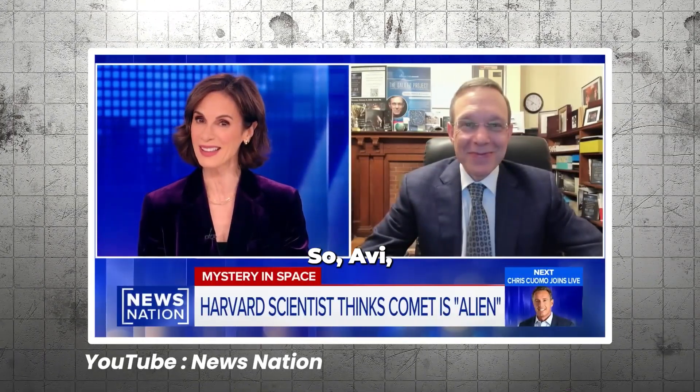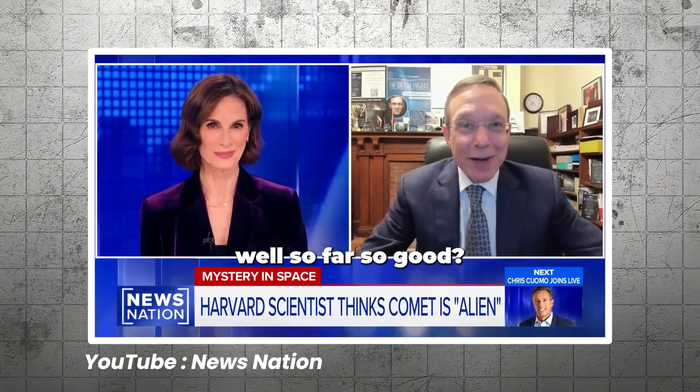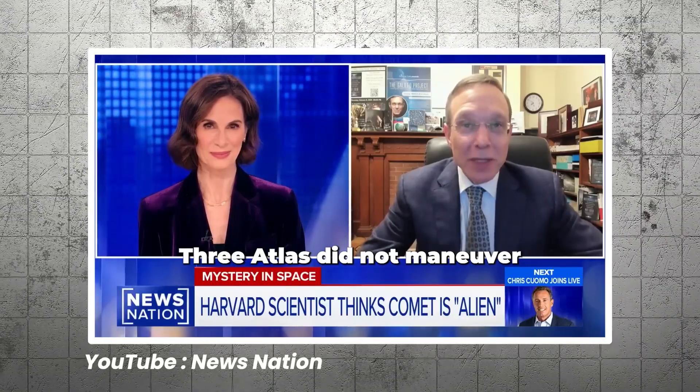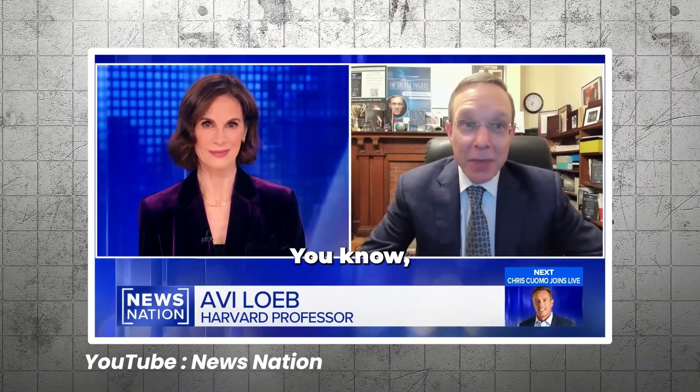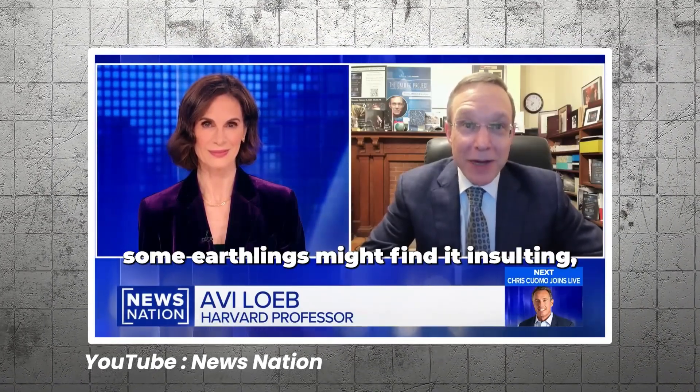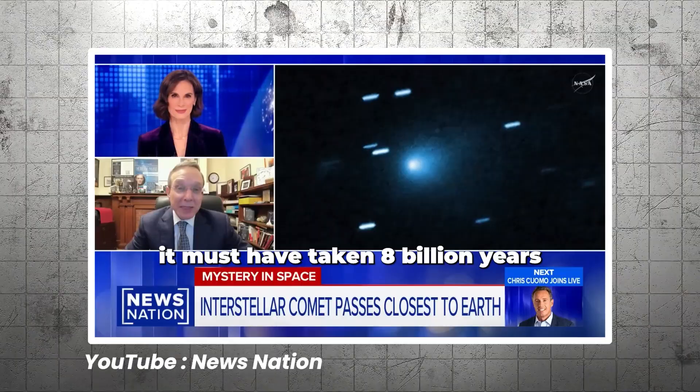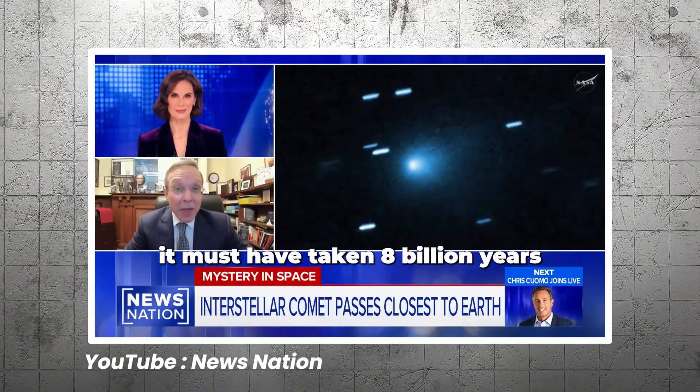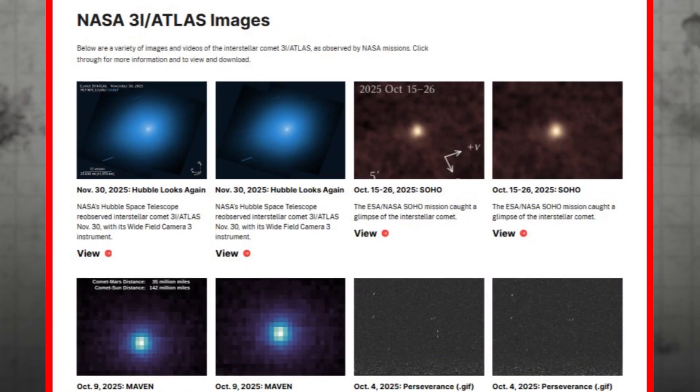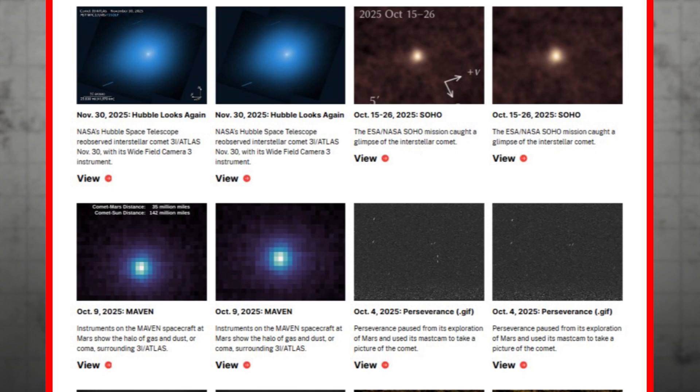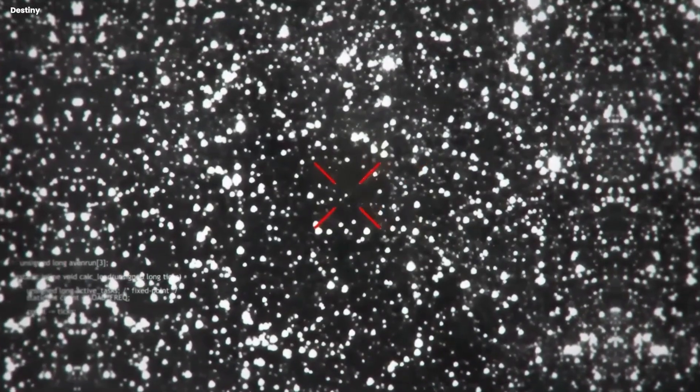So Avi, do you think it's a comet or a spaceship? Well, so far so good. 3I Atlas did not maneuver or display any unusual activity when it came closest to Earth. You know, some Earthlings might find it insulting, but the truth of the matter is that with its initial speed, it must have taken it a billion years or many billions of years to cross the Milky Way galaxy. And he's been very public about it, going on news shows, writing blog posts, pressuring NASA to release images, even getting a congresswoman to write a letter demanding investigation.